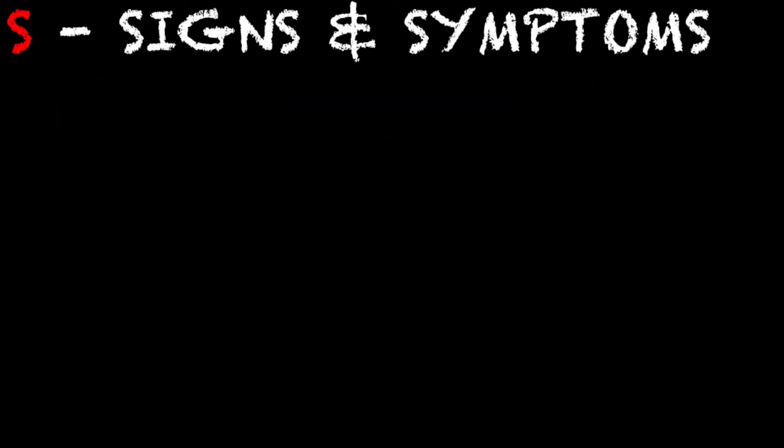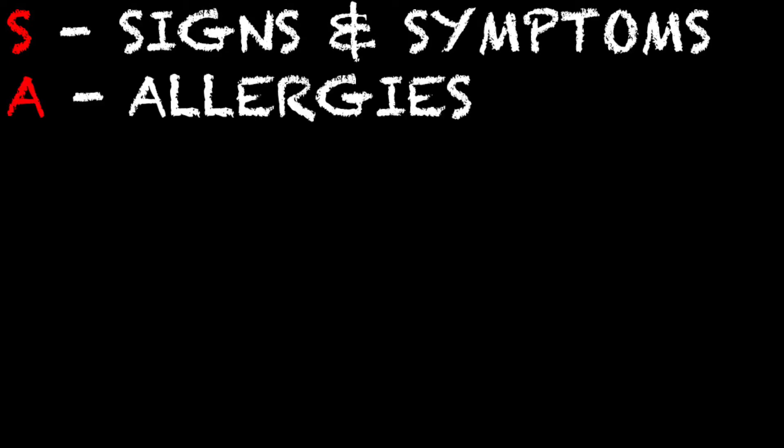First we're going to look at how our patient is presenting. The S is for signs and symptoms, and the A stands for allergies. You want to ask your patient: are you allergic to any medications? A patient may tell you their other allergies — like if they're allergic to bananas or grass — but we specifically want to know what medications they are allergic to.